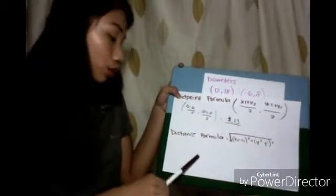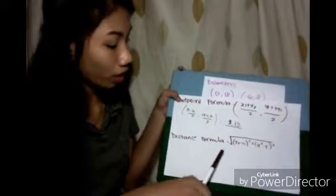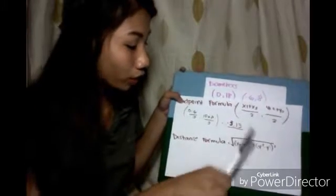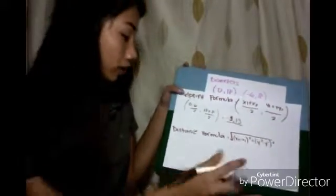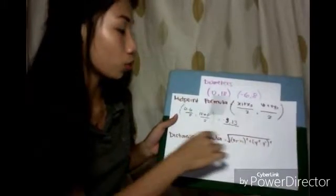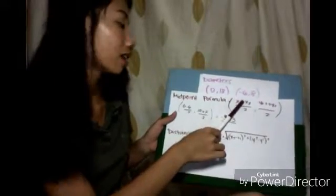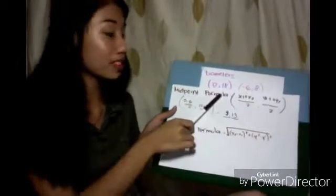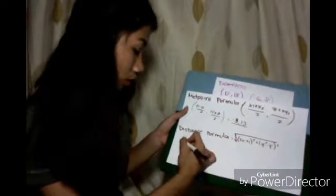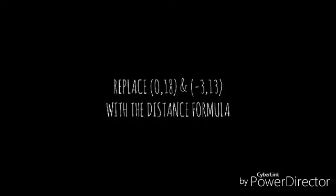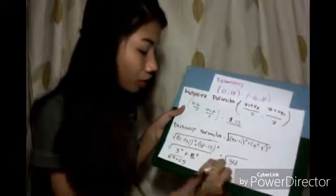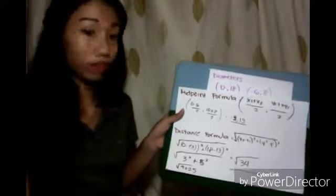To find the radius of a circle, we use the formula x of 2 minus x of 1 squared plus y of 2 minus y of 1 squared. Again, we'll just replace it. We'll just pick any of these two, 0 comma 18 or negative 6 comma 8. Of course, we will choose the easiest, which is 0 comma 18. The square root of 34. We found our radius.